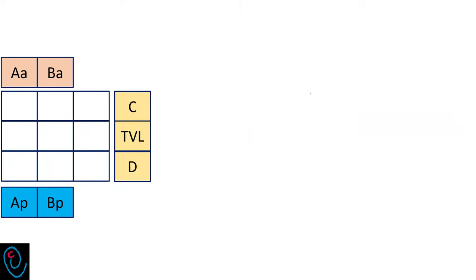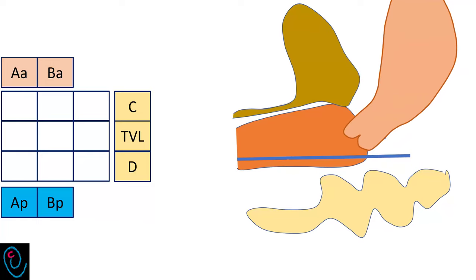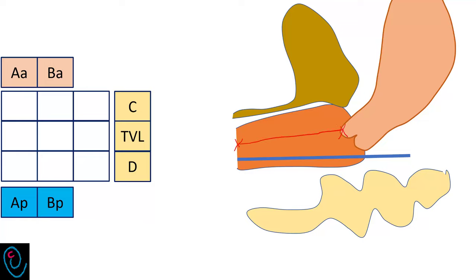Let's start with the apical compartment. Ask the patient to relax, reduce the prolapse, and measure the distance from the hymenal edge to the posterior fornix — this is called total vaginal length. Then ask the patient to strain. Now measure the distance from the hymenal edge to the tip of the cervix — this is called C. And measure the distance from the hymenal edge to the posterior fornix after straining — this is called D.